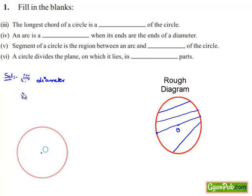Now moving on to the 4th blank. An arc is a blank when its ends are the ends of a diameter. Let us consider the figure as given.